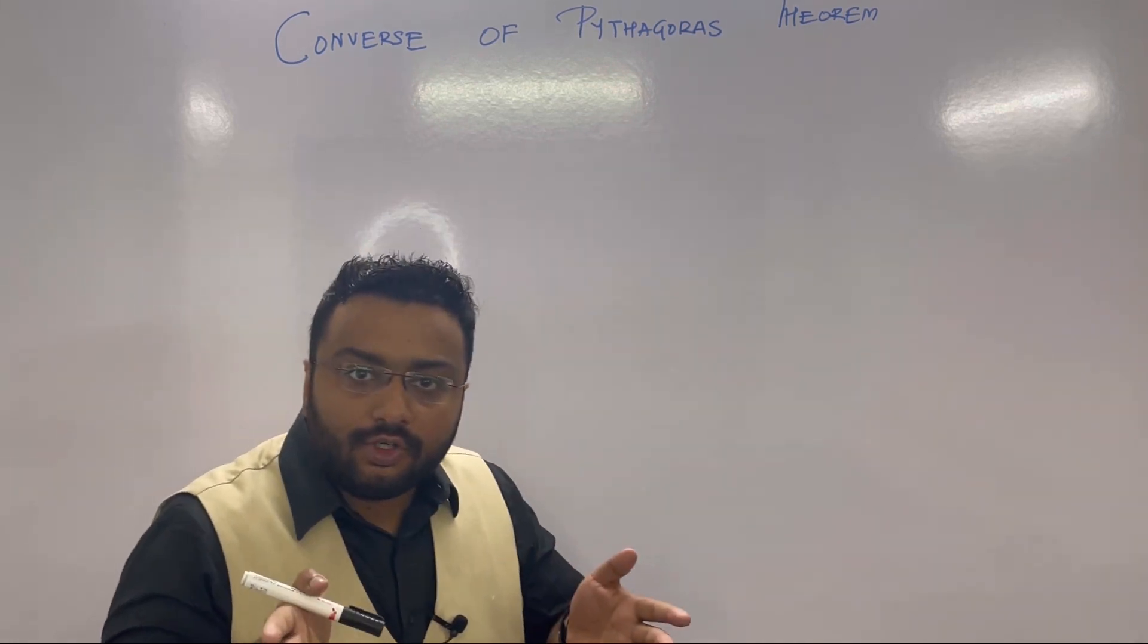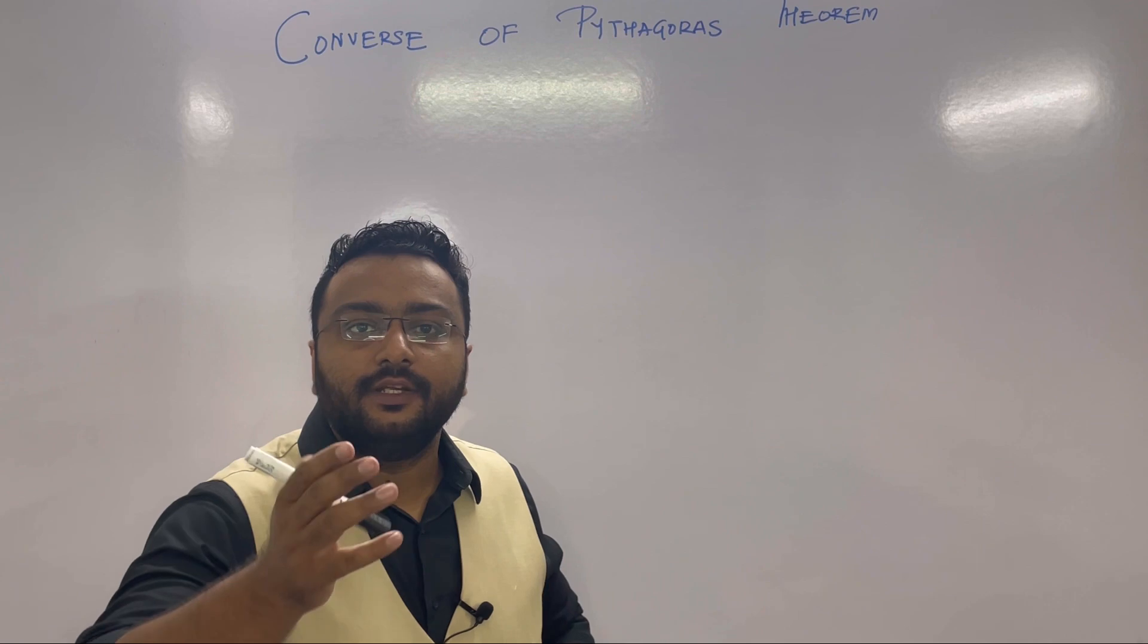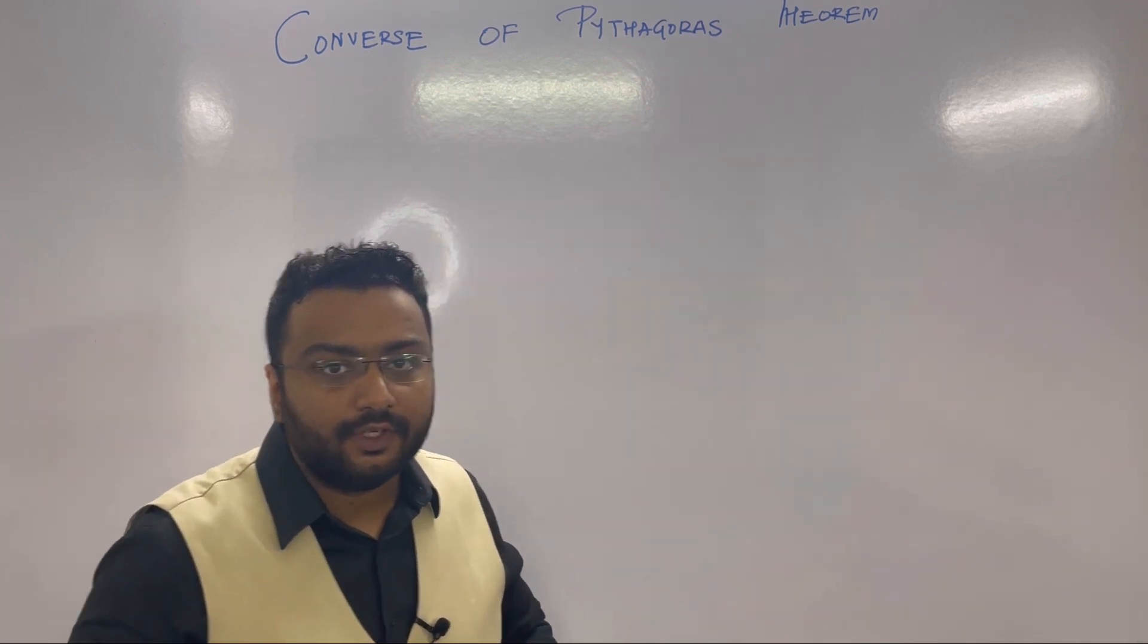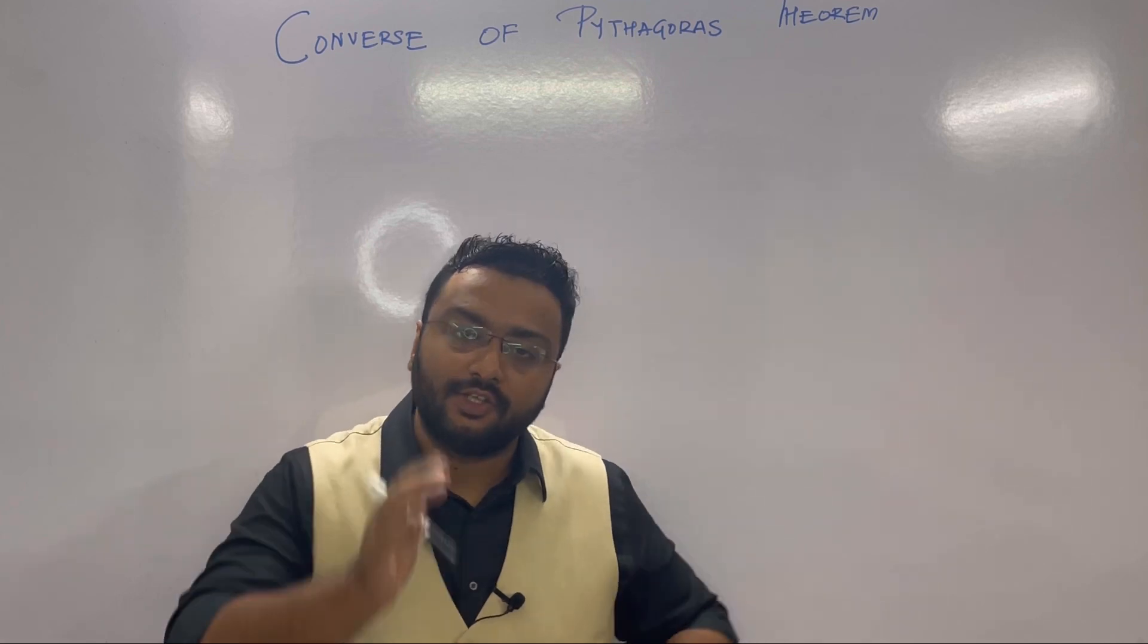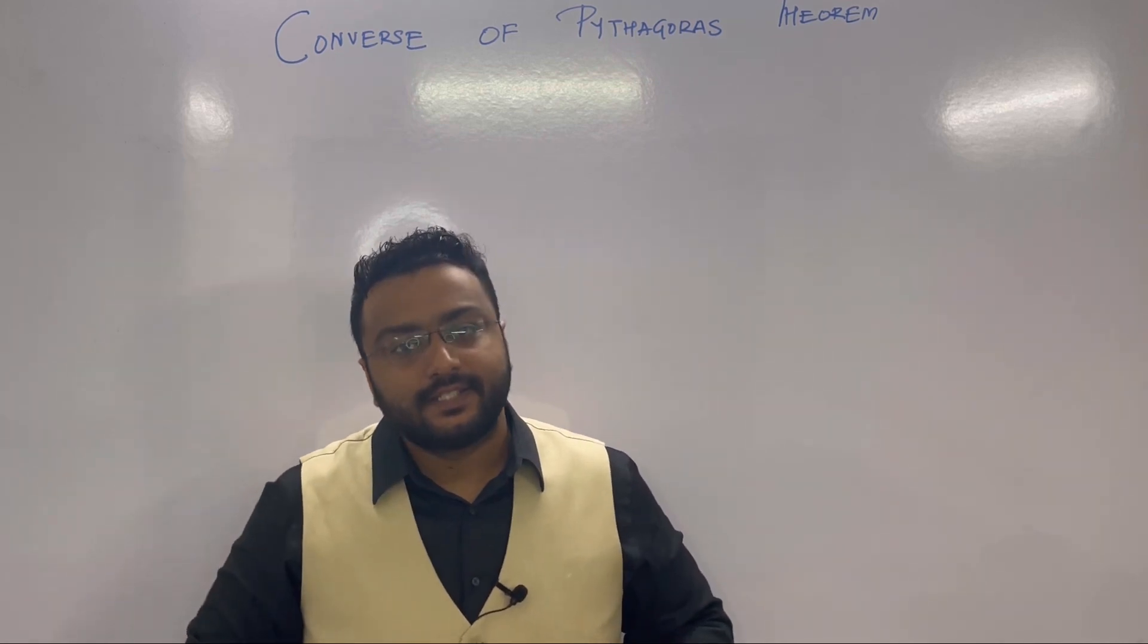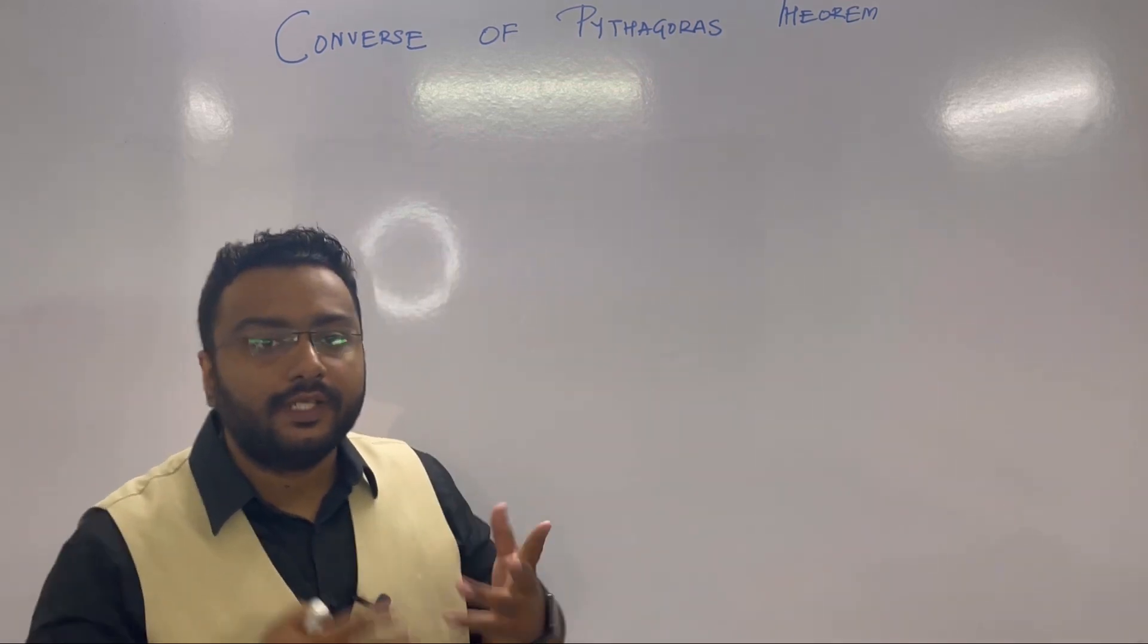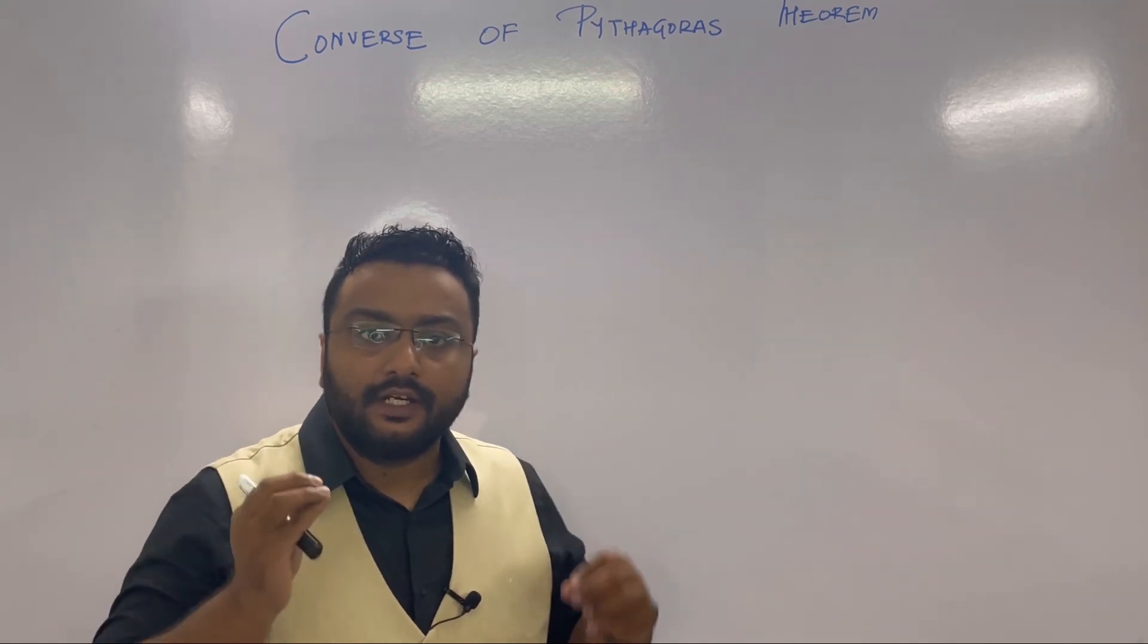We all know what Pythagoras theorem is. Remember, I taught you in a previous video: there should be a right angle triangle, then hypotenuse square equals side one square plus side two square.